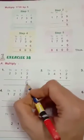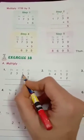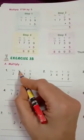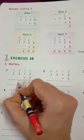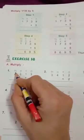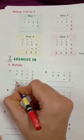Write 6 under ones column. Now multiply tens column. 2 ones are 2. Write 2 under tens column. Now multiply hundreds column. 2 threes are 6. Write 6 under hundreds column. Now multiply thousands column. 2 twos are 4. Write 4 under thousands column. Thus, 2313 multiplied by 2 is equal to 4626.